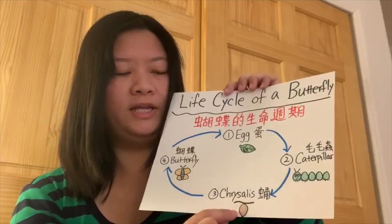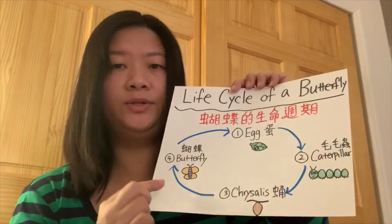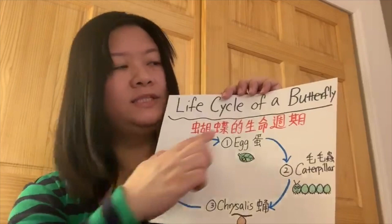And then, after that, when he woke up, he will become a beautiful butterfly. 當牠這個蛹醒來之後呢,會變成一個很漂亮,很漂亮的蝴蝶。So, this is the life cycle of a butterfly.